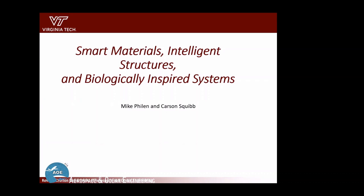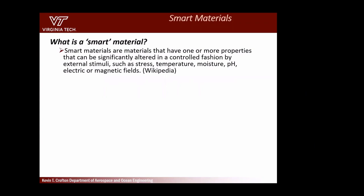Today I wanted to talk about smart materials, intelligent structures, and some other items such as biologically inspired systems. So the question is: what are smart materials? Smart materials are basically materials that respond to stimuli. By applying maybe a voltage, the material will change shape, something like that.